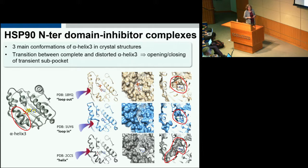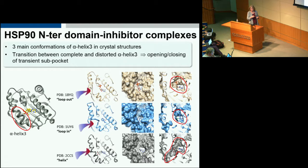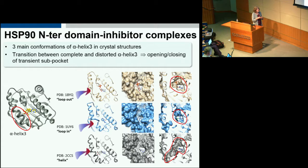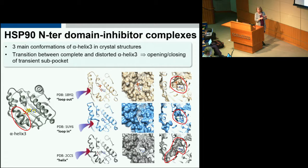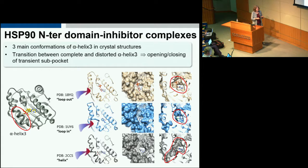Now let's go to a system with more complicated determinants of binding kinetics, related to protein conformational dynamics: heat shock protein 90, the N-terminal domain. This domain has been the target of much anti-cancer compound design, with a large amount of information about inhibitors binding in the ATP binding site. Interestingly, one side of this binding site has an alpha helix that's not always an alpha helix — in different crystal structures this region is sometimes loop-out, sometimes loop-in, and sometimes helical — leading to changes in binding pocket shape and the introduction of a transient sub-pocket.